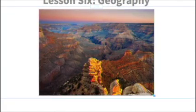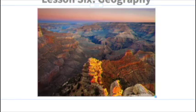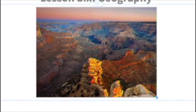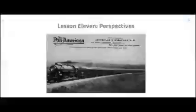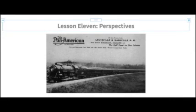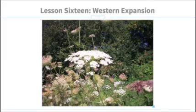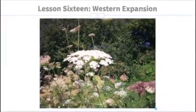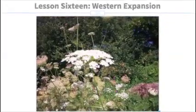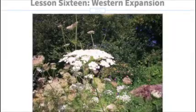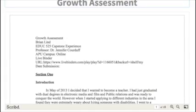Lessons eleven through fifteen went more in depth into perspectives — perspectives of the natives living in the region, and perspectives regarding the plants and what life was like before western expansion. This gives students the concept of just how different and how new the west was. It's a very hands-on unit. Lessons sixteen through twenty cover western expansion — how the United States built up and developed the region.